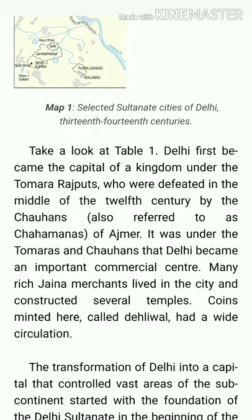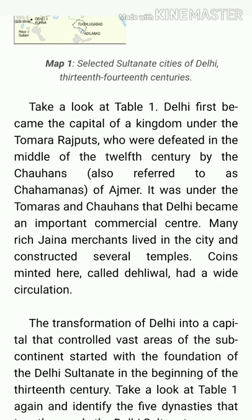Take a look at Table 1. Delhi first became the capital of a kingdom under the Tomara Rajputs, who were defeated in the middle of the 12th century by the Chahamanas — also referred to as Chohans — of Ajmeer. It was under the Tomars and the Chohans that Delhi became an important commercial center, and its importance started from there.